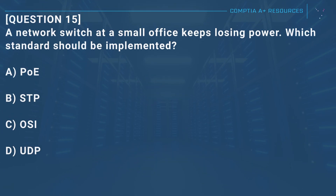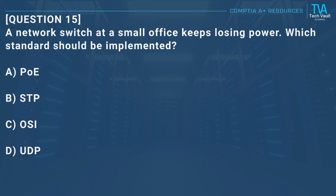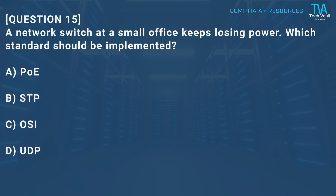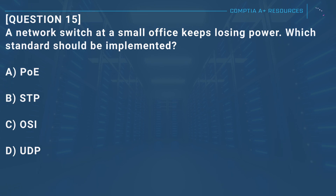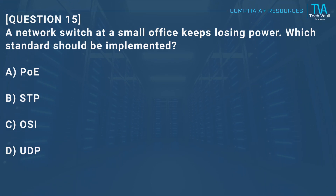Question 15: A network switch at a small office keeps losing power. Which standard should be implemented? A, PoE. B, STP. C, OSI. D, UDP.